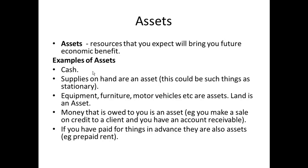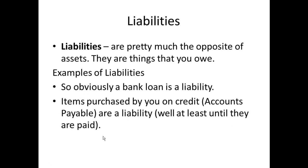If a business owns its building and land, that is also an asset. Some assets are less obvious: money owed to the business is an asset — for example, a sale made on credit creates an accounts receivable. If you've paid for things in advance, that's also an asset: prepaid insurance is an asset that becomes an expense each month as it's used up. Similarly, rent paid in advance is an asset until used.